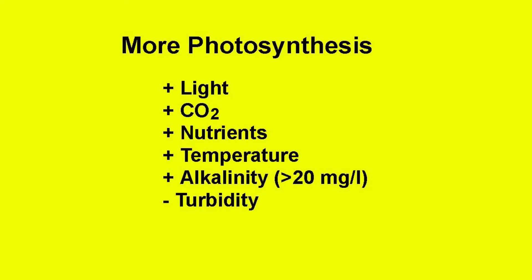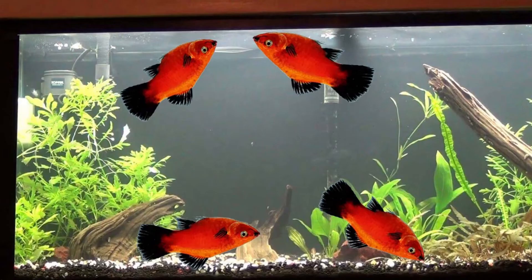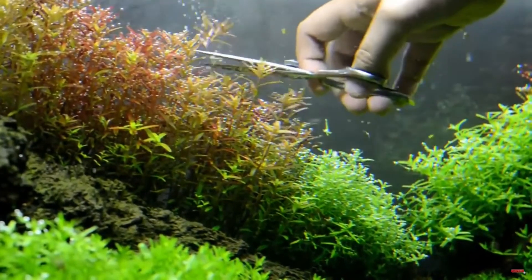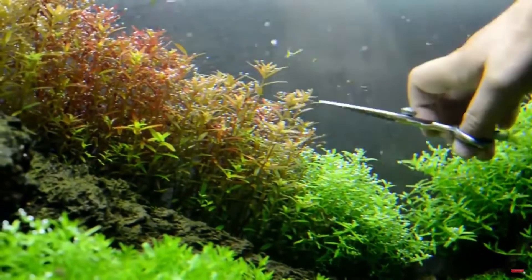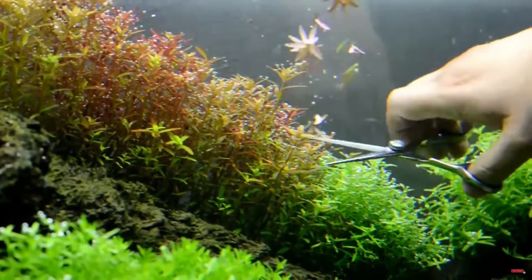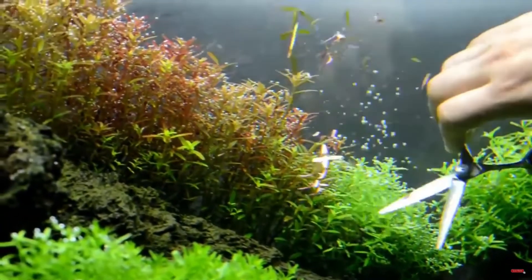How can we make photosynthesis more efficient? The efficiency of photosynthesis depends on available light, carbon dioxide, nutrients, temperature, and alkalinity. If we optimize these factors for plants, we achieve more photosynthesis and more oxygen. However, with more photosynthesis the plants grow more and can exceed the carrying capacity of the aquarium, both for plants and animals. To avoid this, we must trim or remove the plants to preserve a stable state and a balance between oxygen and carbon dioxide.